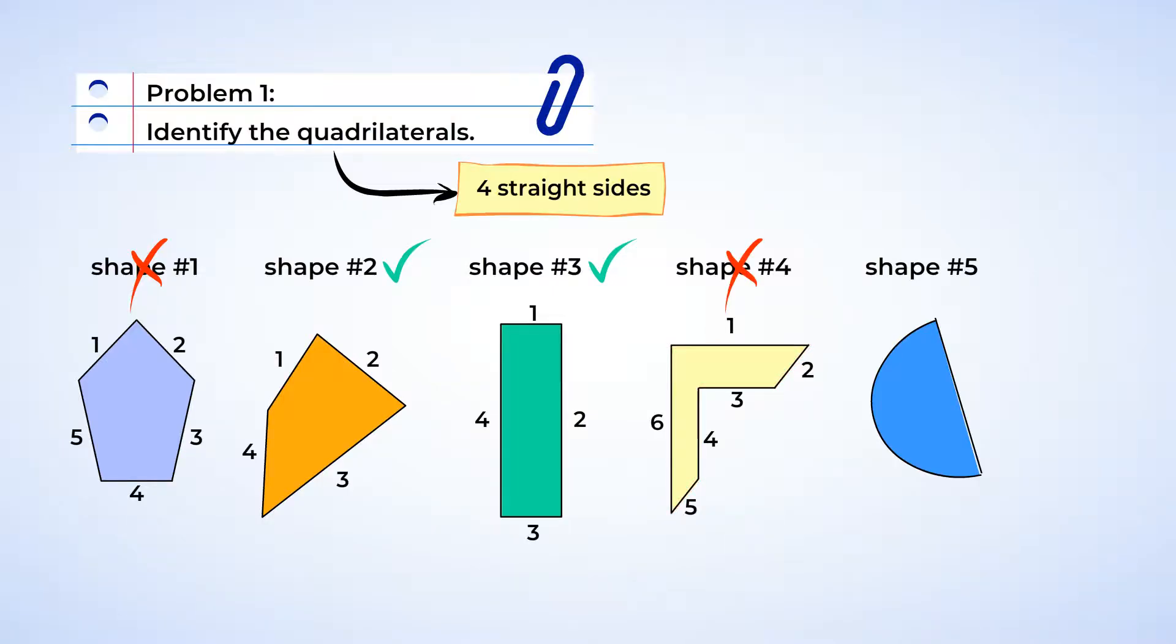Our last shape, number five. Hey, look at that curved side. A quadrilateral has to have four straight lines. Since this shape has a curved side, it's not a quadrilateral. Woo! I think we did it! Great work identifying quadrilaterals!